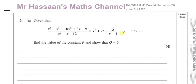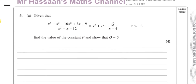Part A of this question is for us to write this algebraic fraction in the form given. It says find the values of the constant P and show that Q equals 5. So basically we have to simplify this algebraic fraction.